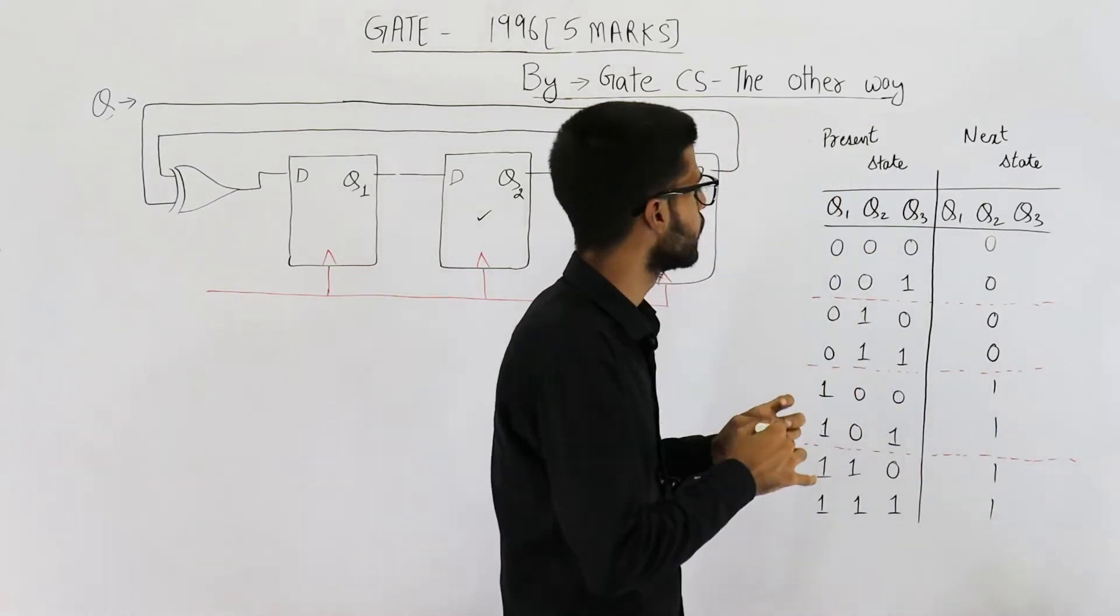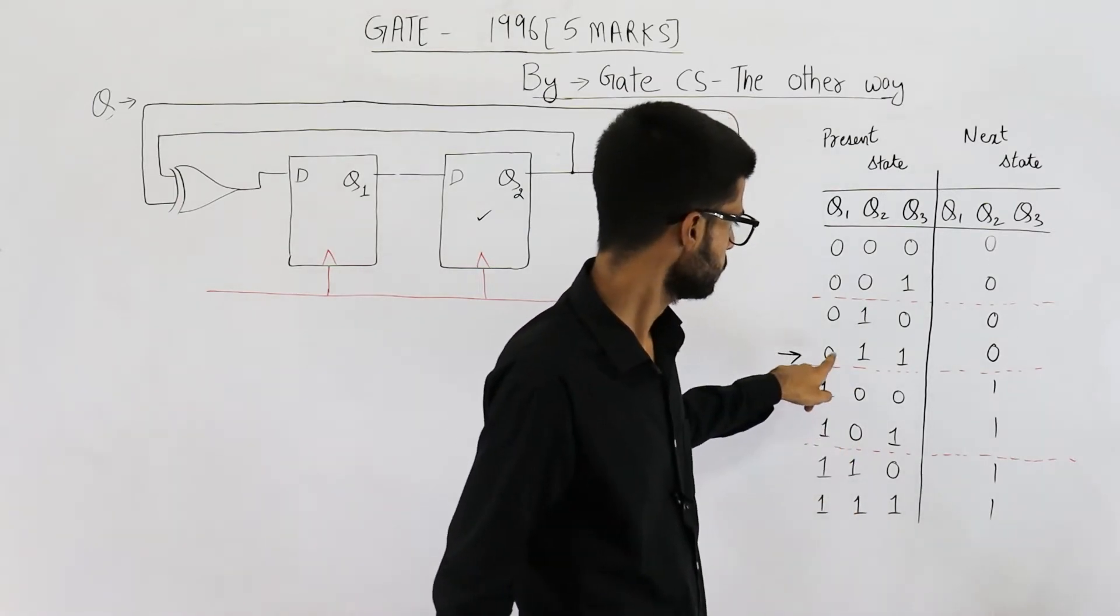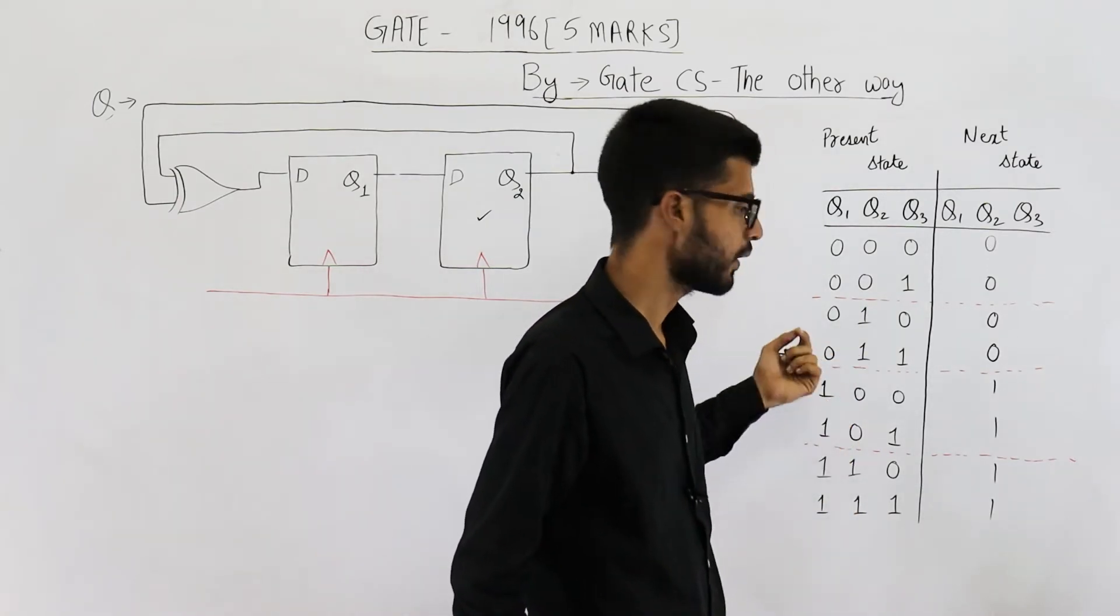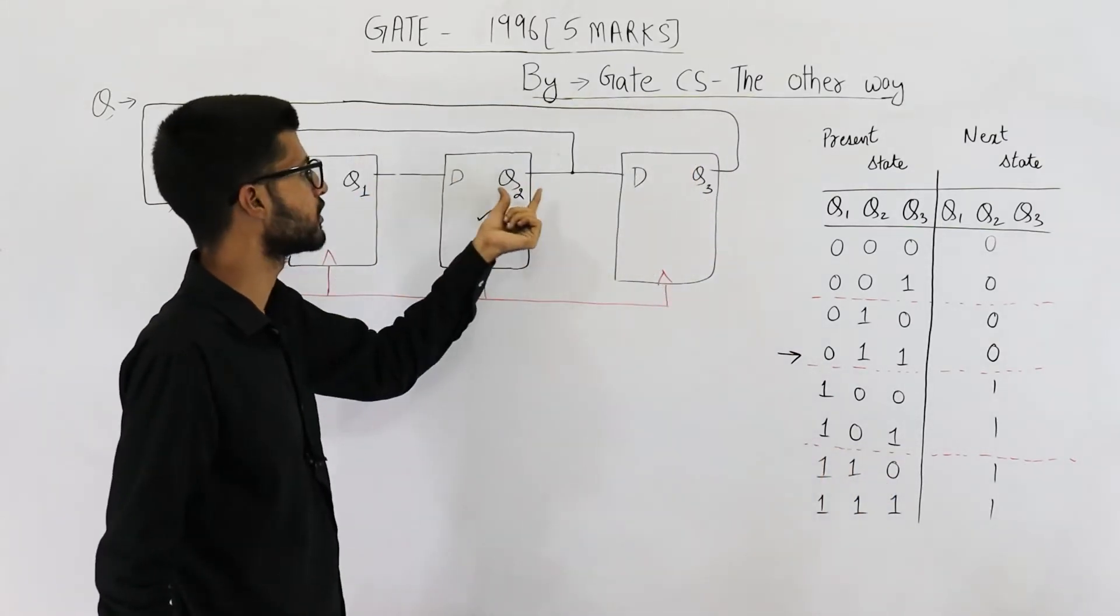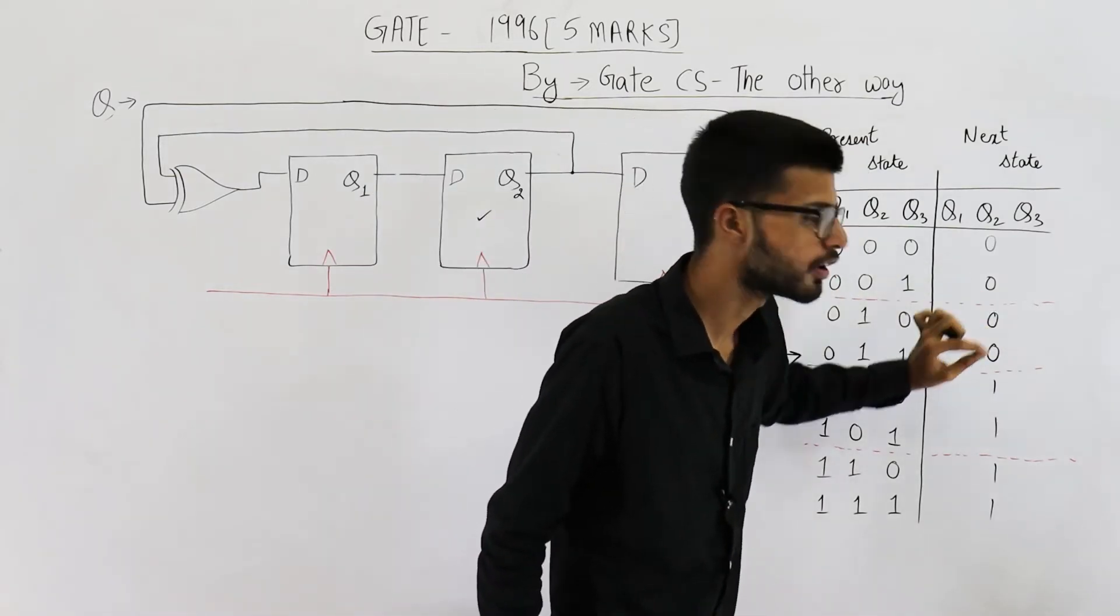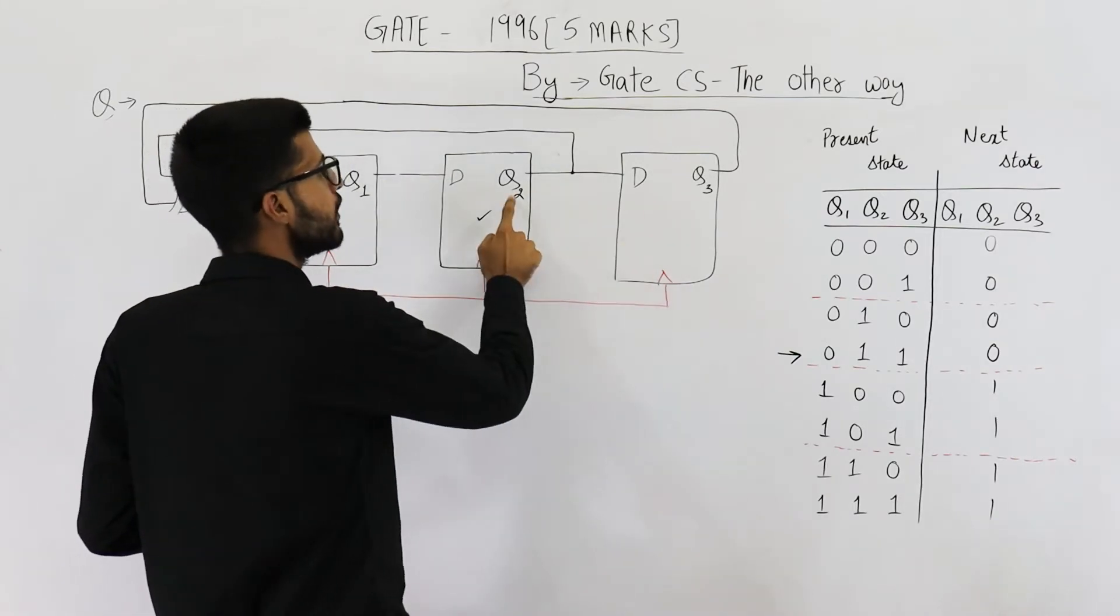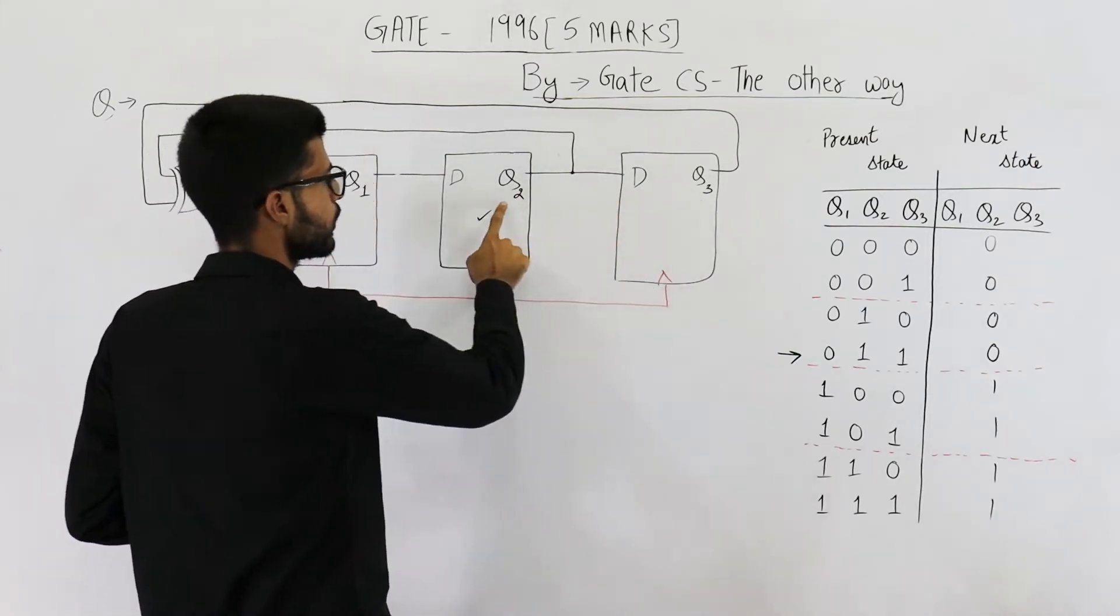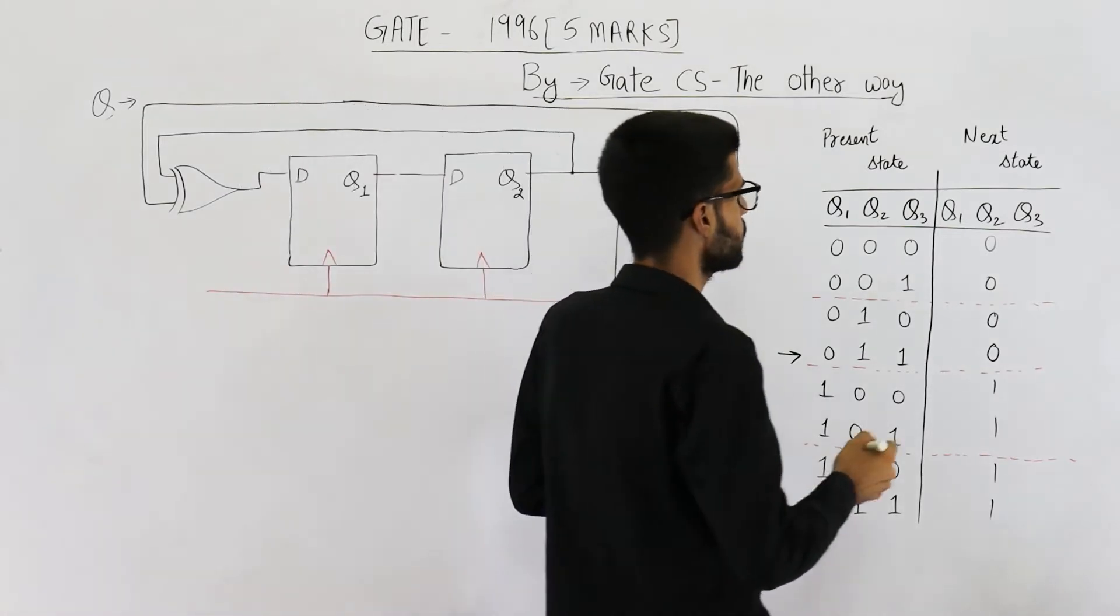See, suppose on this state 0, 1, 1, whenever a clock signal is given, the value of Q1 will be shifted to Q2. So Q1's value is 0 and it is shifted to Q2. Similarly, the value of Q2 will be shifted to Q3, because this one is also a D flip-flop. So I'm copying that column as it is.